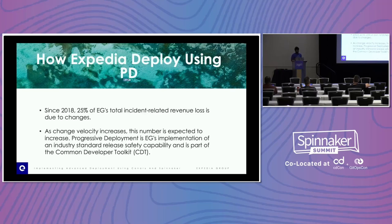Here is how Expedia deploys. Currently we were doing blue-green deployment, and now we have introduced progressive deployments — an advanced version built on top of Spinnaker and Canary. A key fact: the total revenue loss at Expedia due to deployment changes is 25%, which is a quite large amount. As we are progressing with multiple deployments, these deployments will definitely have issues that we need to reduce.